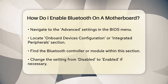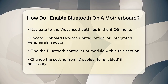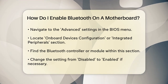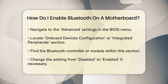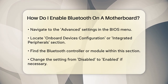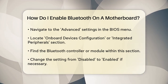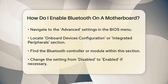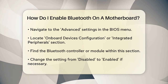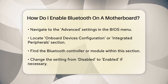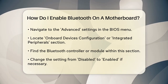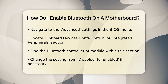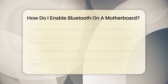In the BIOS, navigate to the Advanced settings. For most motherboards, such as the ASUS Z790 series or MSI B650M, you'll need to select Advanced and then find the Onboard Devices Configuration or Integrated Peripherals section. Here, you'll find the Bluetooth controller or Bluetooth module. Make sure it is set to Enabled. If it's set to Disabled, change it to Enabled.